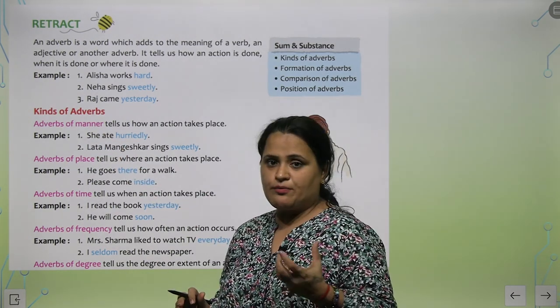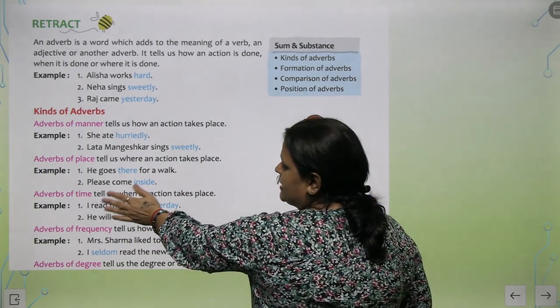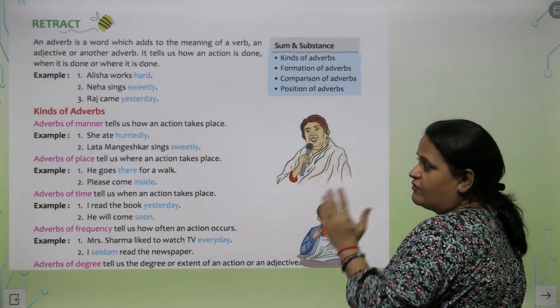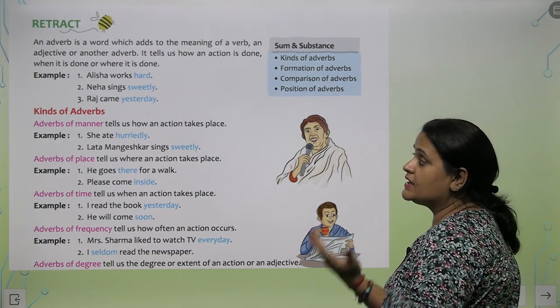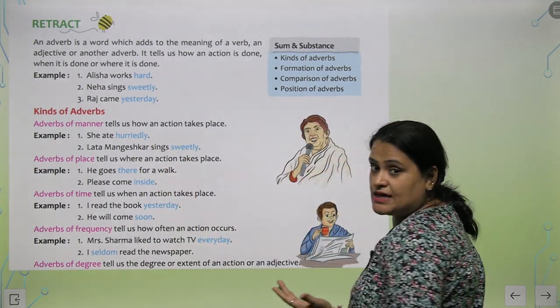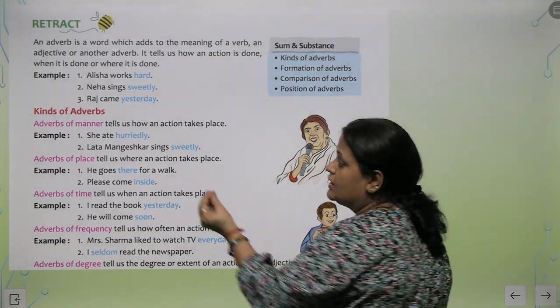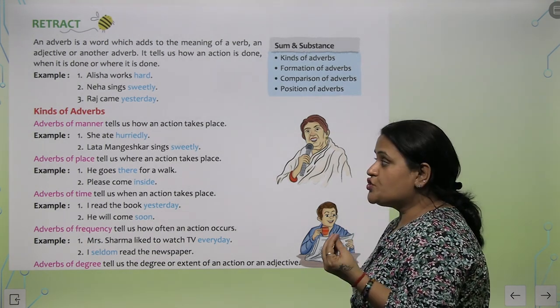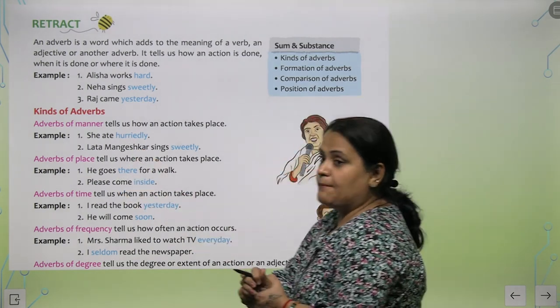There are kinds of adverbs which I am going to explain. Adverbs of manner - how an action takes place. For example, she ate hurriedly. How did she eat? Hurriedly, meaning quickly. Lata Mangeshkar sings sweetly. How does she sing? Sweetly. So you will get the answer of how.